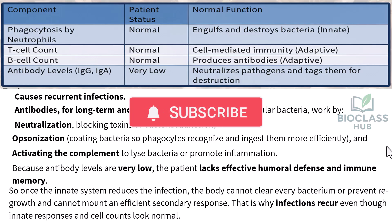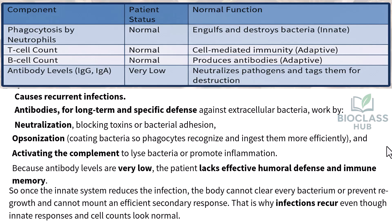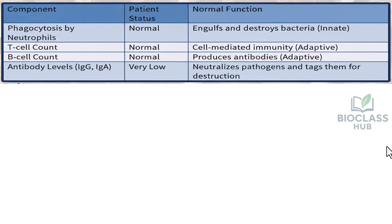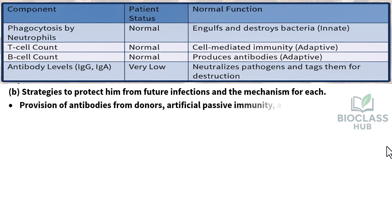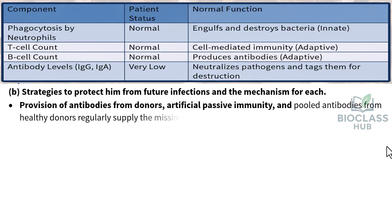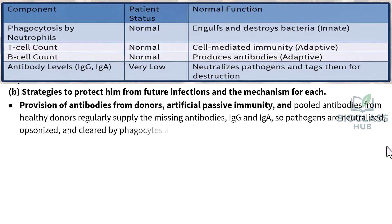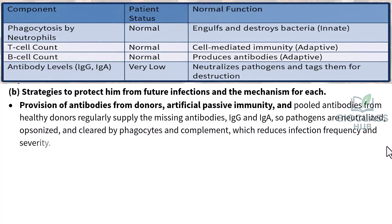Part B — strategies to protect him from future infections. Provision of antibodies from donors (artificial passive immunity): pooled antibodies from healthy donors regularly supply the missing IgG and IgA, so pathogens are neutralized, opsonized, and cleared by phagocytes and complement, reducing infection frequency and severity.